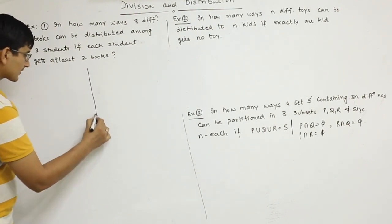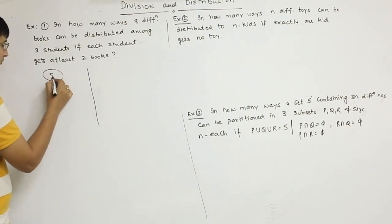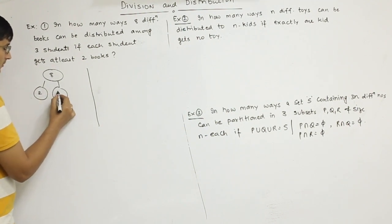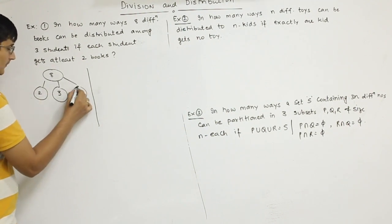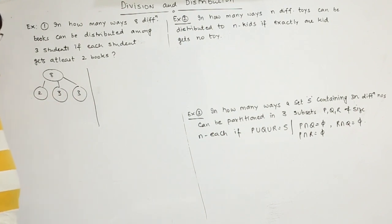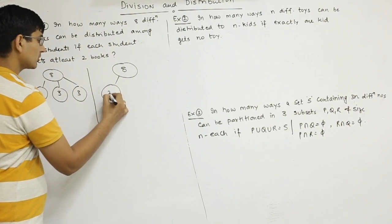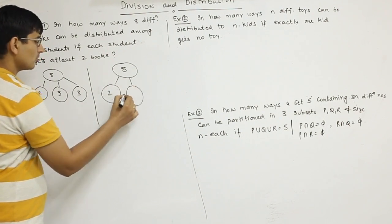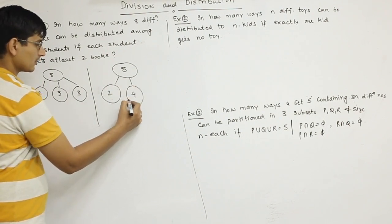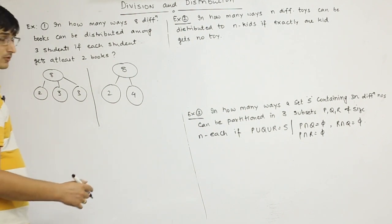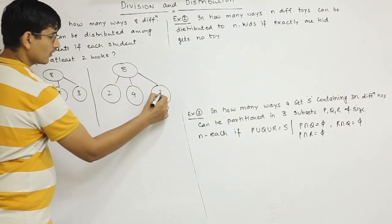You can take two cases. You can take eight books: first student gets two, second student gets three, third student gets three. Or first student gets two books, second gets two, third gets four.